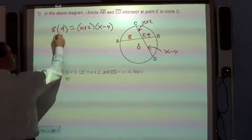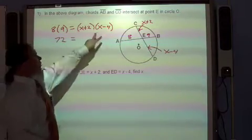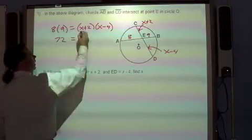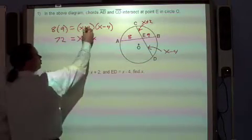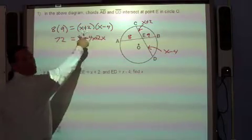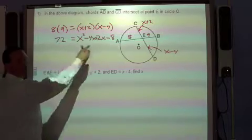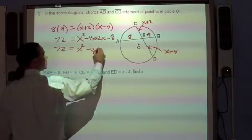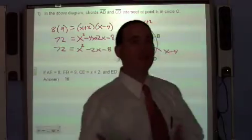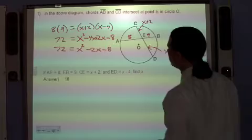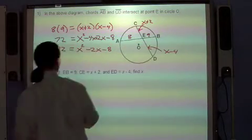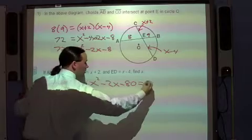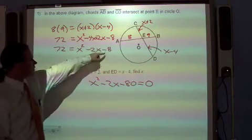Now 8 times 9 is easy, 72. This one on the right-hand side, binomial times binomial, so you have to use double distribution or FOIL. X times X is X squared, X times negative 4 is negative 4X, 2 times X is 2X, and 2 times negative 4 is negative 8. So you combine some terms here: 72 equals X squared minus 4 plus 2 leaves you with negative 2X minus 8. At this point you should see that you've got a quadratic equation.